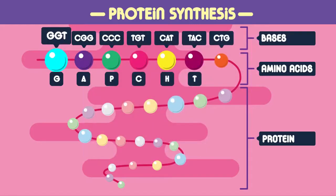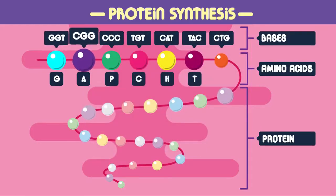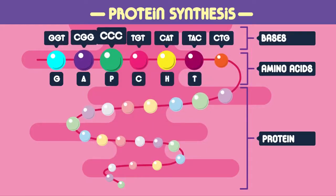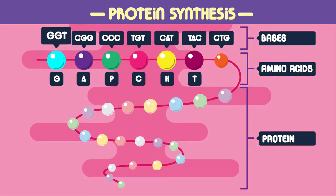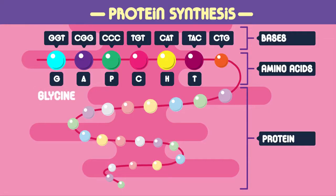A set of three bases in the DNA molecule codes for a particular amino acid. GGT, for example, codes for the amino acid glycine. The three base codes are known as codons, so GGT is a codon for glycine.